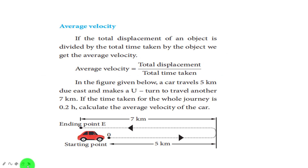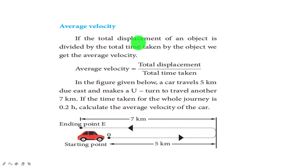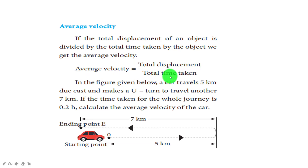Now let us consider average velocity. The displacement may differ for equal intervals of time. Average velocity equals total displacement divided by total time taken.